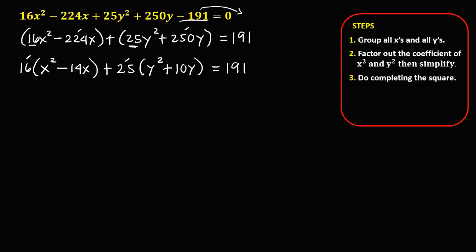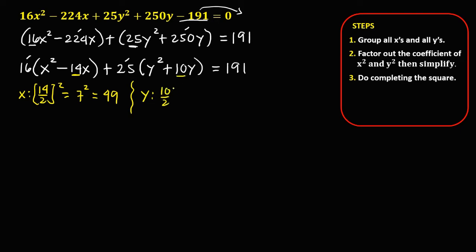Now do completing the square. For x, take the coefficient 14, divide by 2 to get 7, then square it: 7 squared is 49. For y, take the coefficient 10, divide by 2 to get 5, then square it: 5 squared is 25.